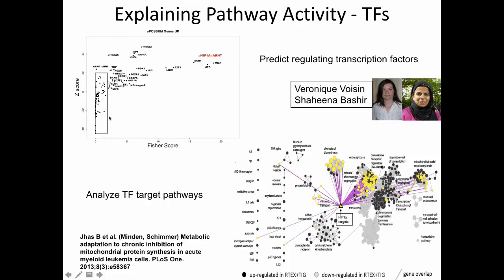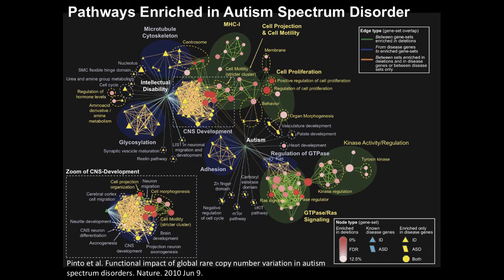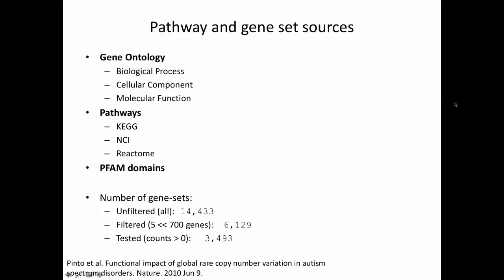Here's an example of the same thing we did with a transcription factor. Veronique and Shahina, a biostatistician we worked with, were able to do something very similar with transcription factors, and there's a paper here. You'll get these slides so you can see the references. This is what we used to create the autism map I showed you in the beginning. In the autism map we used Gene Ontology and pathway databases - KEGG, NCI, and Reactome. This is six years ago, so we have better pathways now.